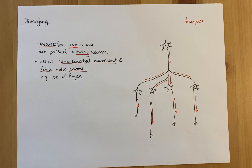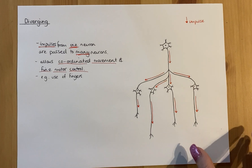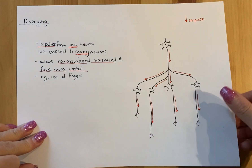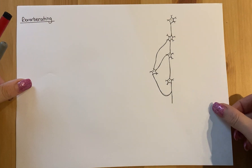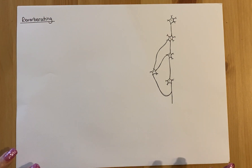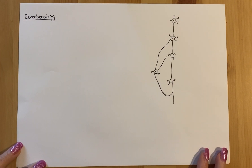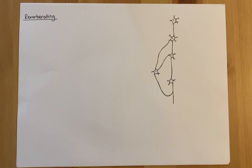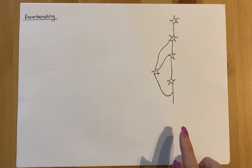Diverging pathways are often used for motor pathways, not sensory pathways. The third and last neural pathway is what's called a reverberating pathway. In general English, reverberation is similar to an echo — it's a repetition, a sound that is repeated. And that's exactly what happens in these neural pathways.